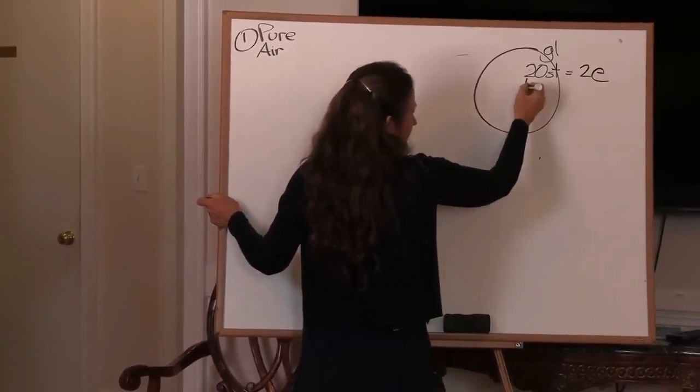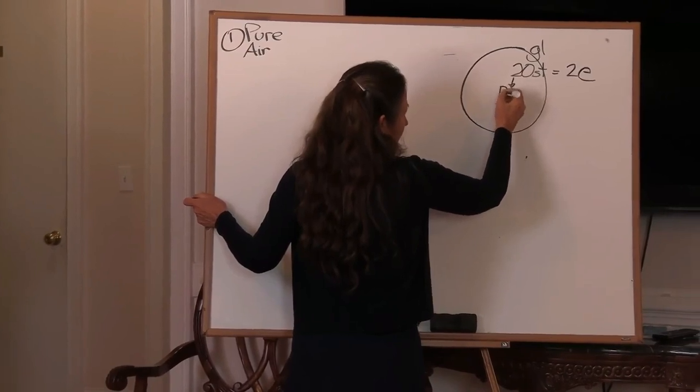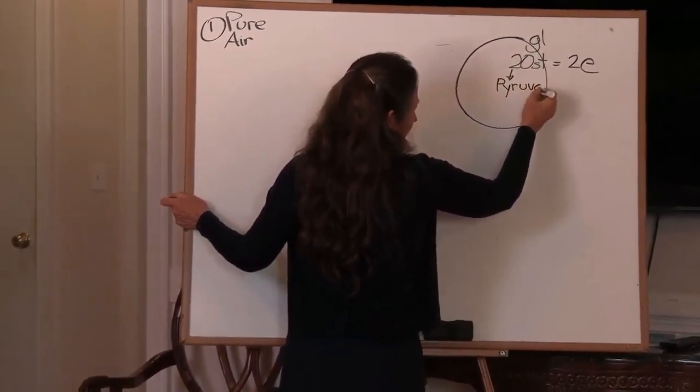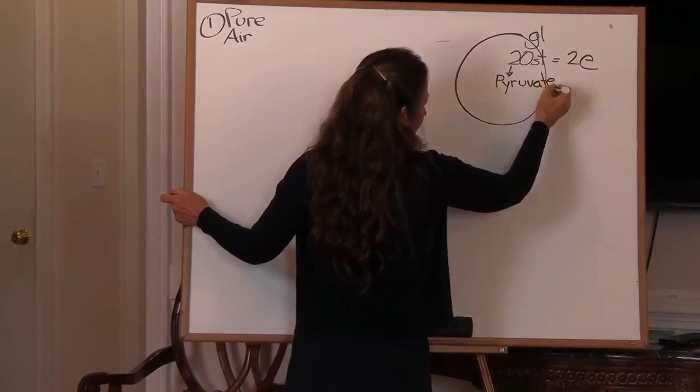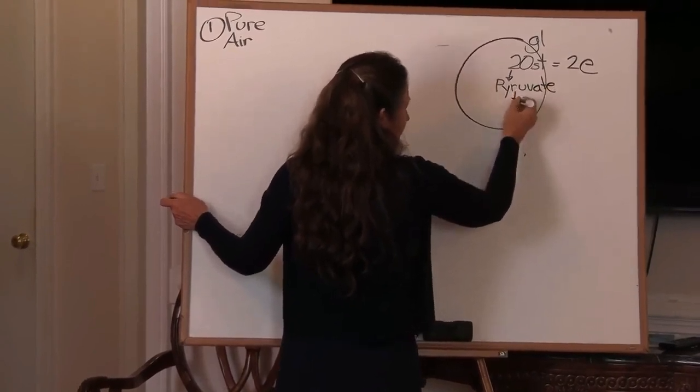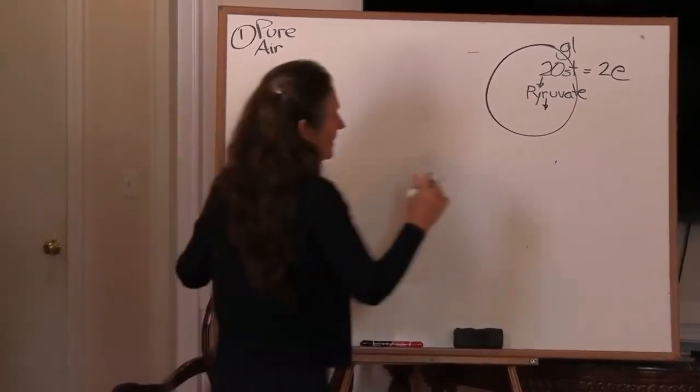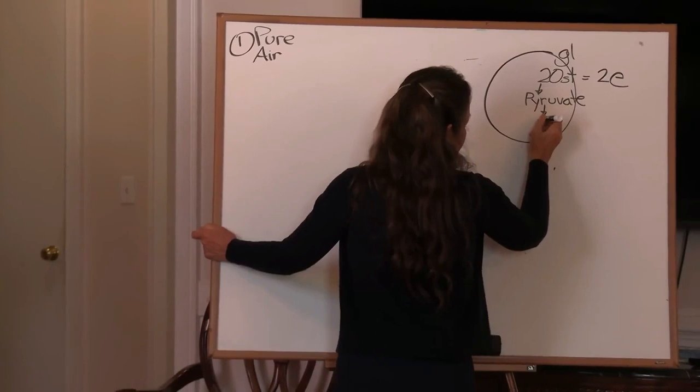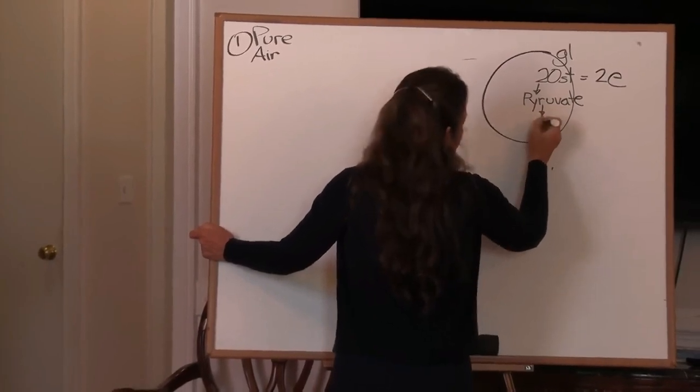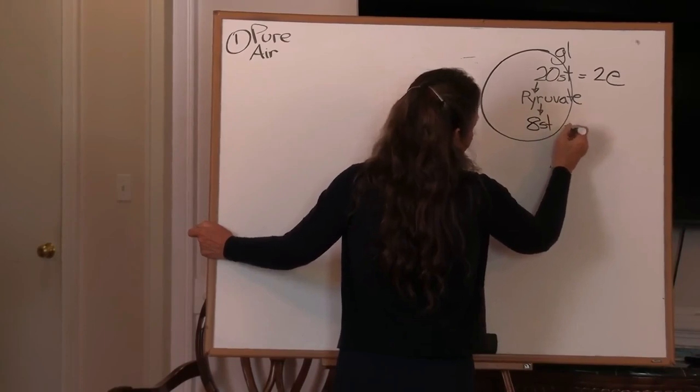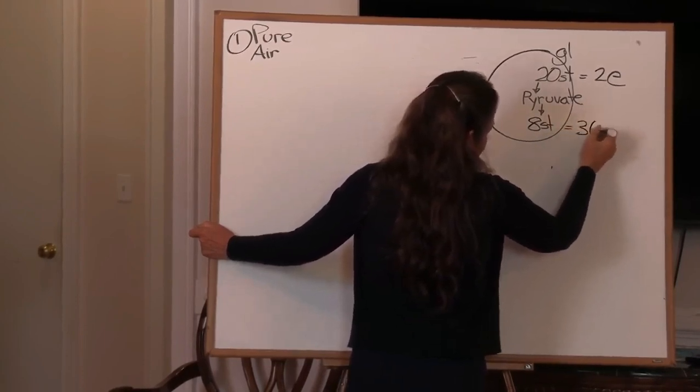The end result of the 20-step pathway is a chemical form of glucose called pyruvate. And pyruvate, as the chemical form of glucose, gets fed into the next part of the cell. It's called the powerhouse of the cell. This is the mitochondria, specifically inside the Krebs cycle, which has an eight-step pathway. But that gives us 36 units of energy.